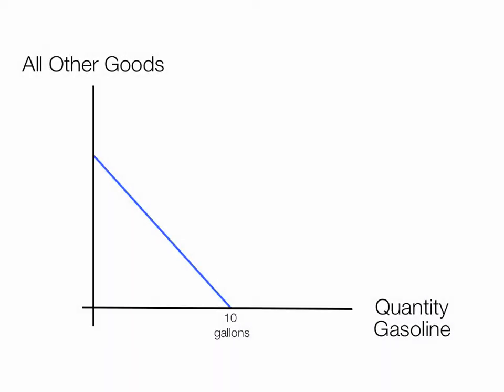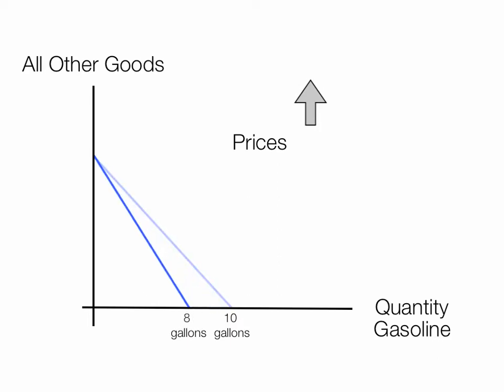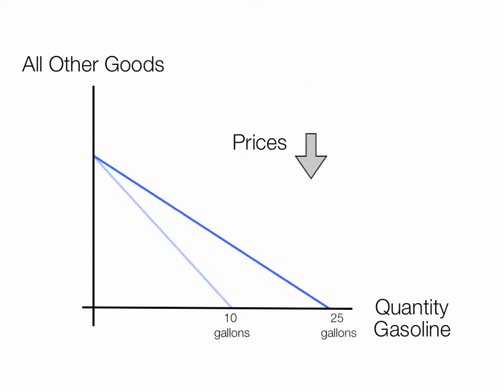The blue line represents a budget line, and I'm going to discuss how prices impact the budget line. When prices of gasoline rise, we see that less can be consumed, so the budget line shifts inward. On the other hand, when prices go down, we see the budget line shifting outward, and the person can purchase more gasoline.